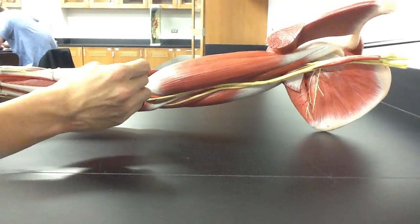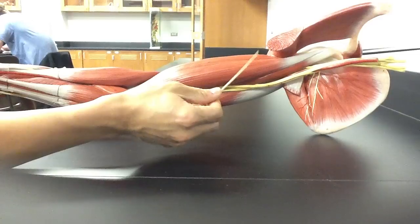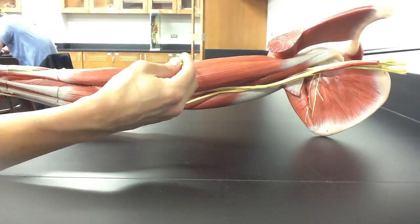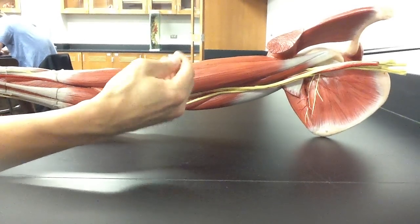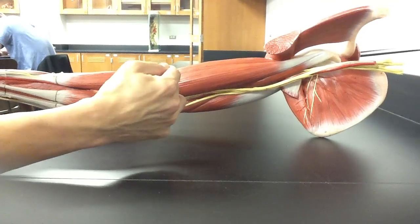It goes down to the radial tuberosity and then does flexion of the elbow and the shoulder and does supination. When we take a look, we kind of divide up its actions. This does both flexion of the elbow and the shoulder.